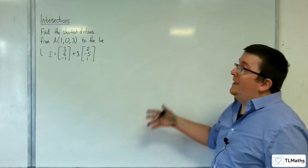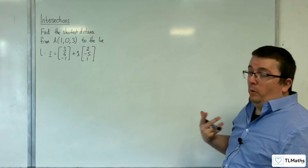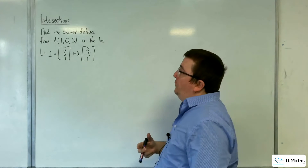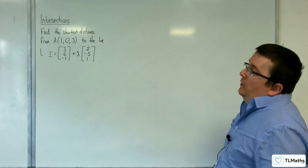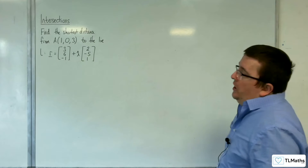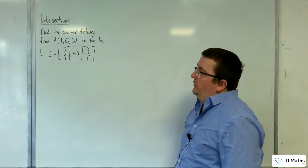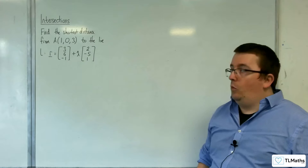In this video we're going to be looking at finding the shortest distance from a point A with coordinates (1, 0, 3) to the line L with equation r equals (3, 6, -1) plus lambda lots of (2, -5, 1).